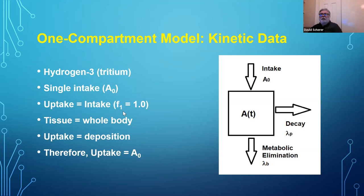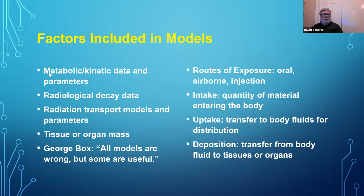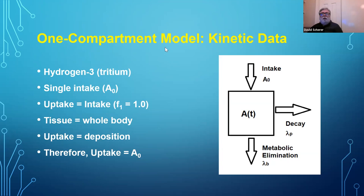I'm going to show you a very simple model — a one-compartment model showing kinetics. I said there are many factors: one is kinetic data and the other is radiological data. In this case, we have a certain amount of material taken in — there's an intake. It's metabolized in the body. A certain amount will undergo radioactive decay, and a certain amount will be eliminated by metabolic processes. We're modeling this as a single intake — looking at hydrogen-3, or tritium, as water. When water goes into the body, it goes throughout the entire body and doesn't concentrate in a particular organ.